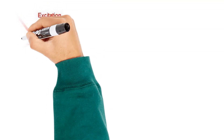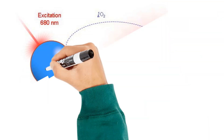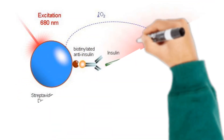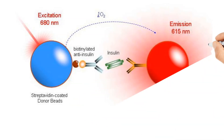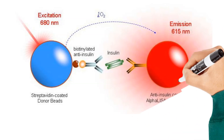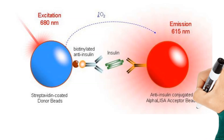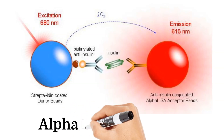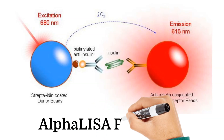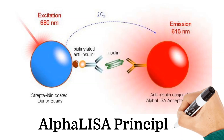Alpha-LISA (Amplified Luminescent Proximity Homogeneous Assay) uses donor beads coated with streptavidin and acceptor beads conjugated with anti-insulin antibodies, along with biotinylated anti-insulin antibodies, and requires no washing step. In the presence of insulin, the donor and acceptor beads are brought into proximity as both the biotinylated donor-bead-bound and acceptor-bead-conjugated anti-insulin antibodies bind to the insulin molecule. When laser-excited, the donor beads convert ambient oxygen into singlet oxygen, which reacts with the acceptor beads to cause a luminescent response proportional to insulin concentration.